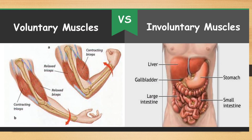Basically, muscles are of two types: voluntary muscles and involuntary muscles. Voluntary means that it depends on our will, whereas involuntary means that it does not depend on our will. Actions like jumping, running, and eating food are voluntary actions, and the muscles that bring about these actions are voluntary muscles.